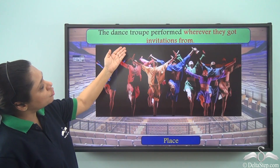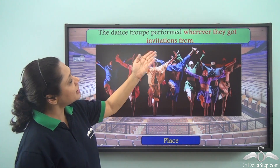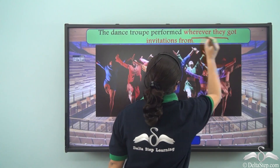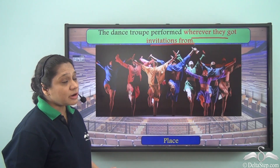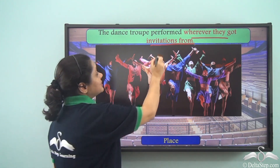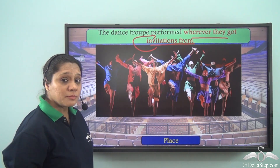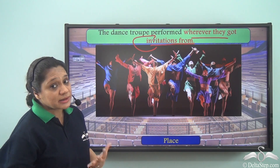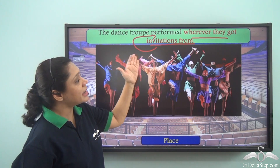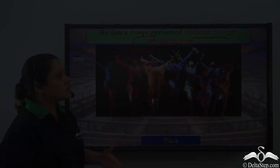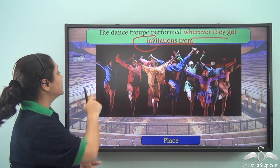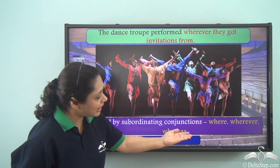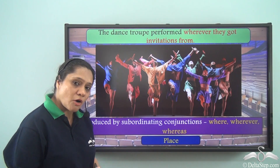Consider: 'The dance troupe performed wherever they got invitations from.' Here 'wherever they got invitations from' is an adverb clause because it describes the verb 'performed,' doing the work of an adverb of place — answering where did they perform. Adverb clauses of place are introduced by subordinating conjunctions like where, wherever, or whereas.